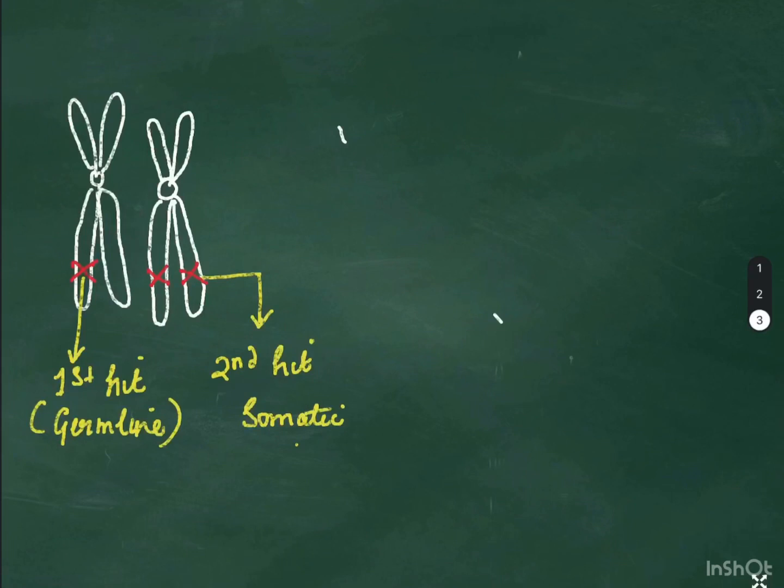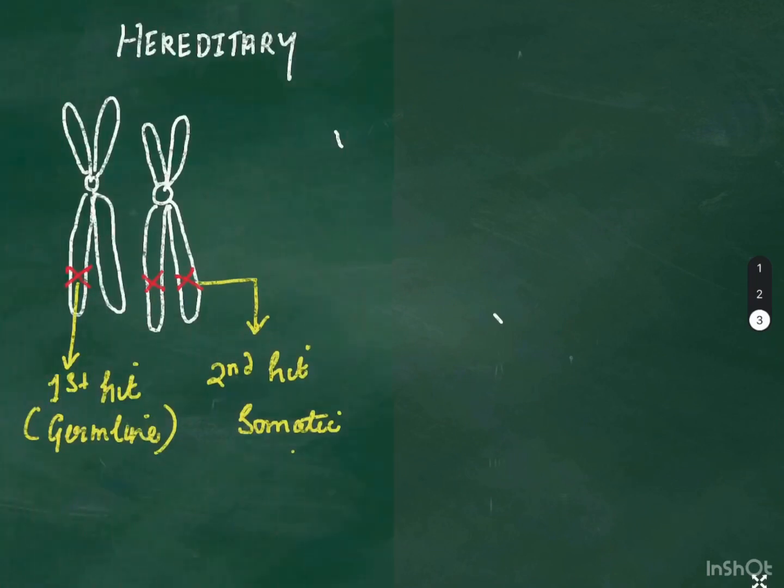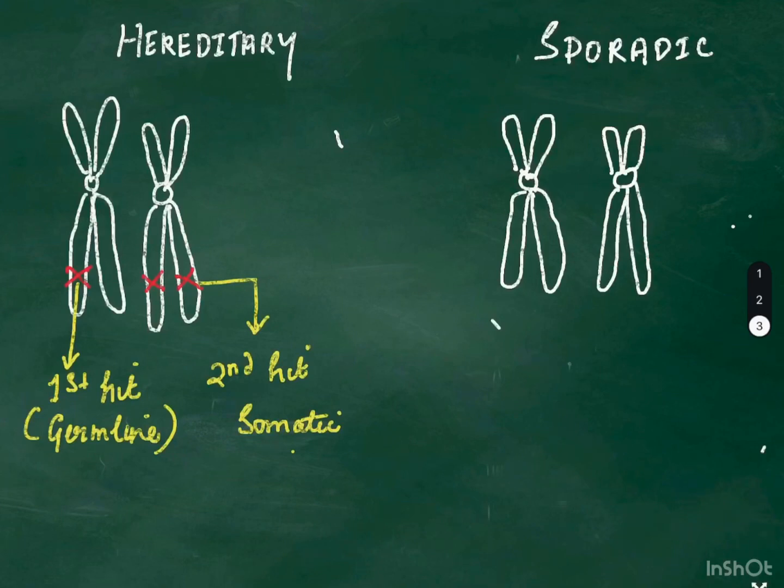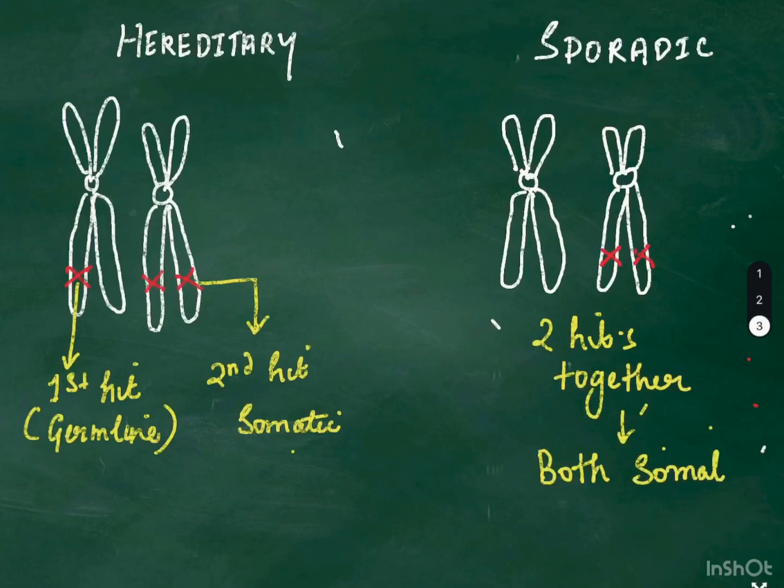The other one is a sporadic mutation which is not inherited and which may occur de novo. The both hits are together after birth. So the risk of transmission to the offspring is almost nil in this, compared to hereditary which has around 40% of the chances of transmission. So as you can see here how the two hits together cause a tumor. This is the sporadic form.